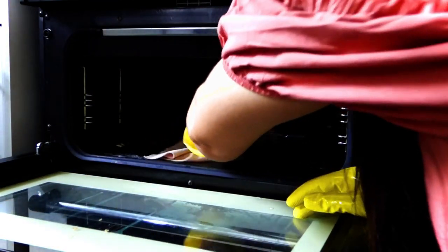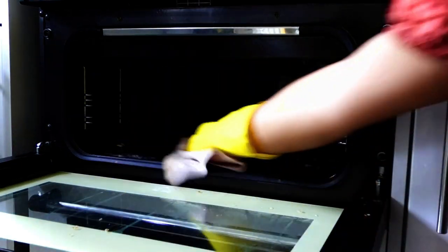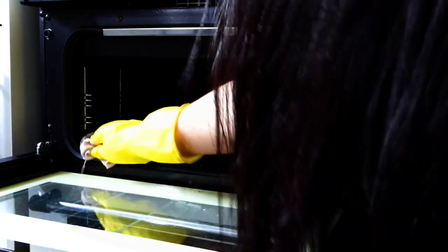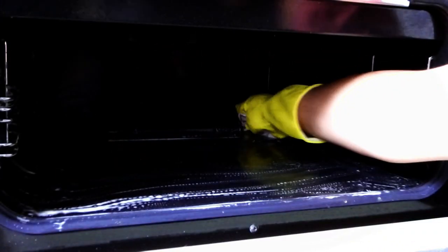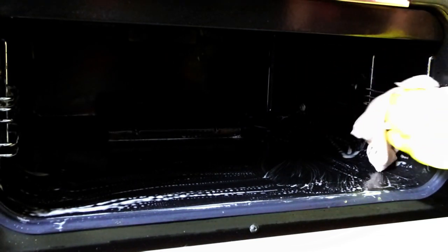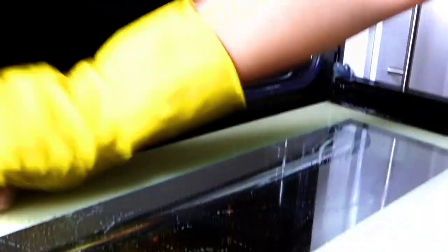So now we are going to remove our overnight solution. I can see it's already worked, already pulled a lot of the grease and grime out of my ovens. So now it's a case of removing it with a wet cloth. This is probably the part that is going to take the longest, but in total the whole oven clean process shouldn't take any longer than an hour from start to finish because you are leaving it overnight.